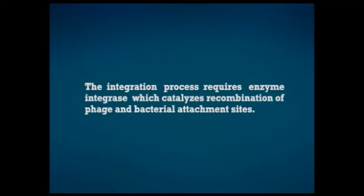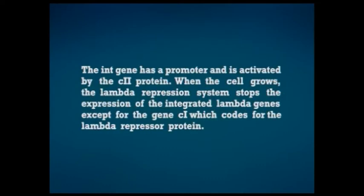The int gene has a promoter and is activated by the CII protein. When the cell grows, the lambda repression system stops the expression of the integrated lambda genes except for the CI gene, which codes for the lambda repressor protein. At the time of replication of the bacterial genome, the integrated lambda genome is also replicated along with it and is transmitted from progeny to progeny.